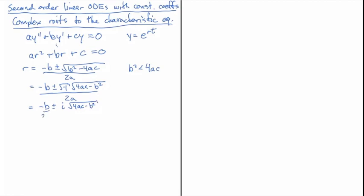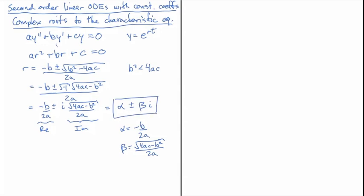I'm going to split up the denominator here, and you can see we have a real part and an imaginary part. I'm going to rename these α ± βi, where α = -b/2a and β = √(4ac - b²)/2a. From now on we'll just work with α ± βi, keeping in mind that α and β come from a, b, and c.